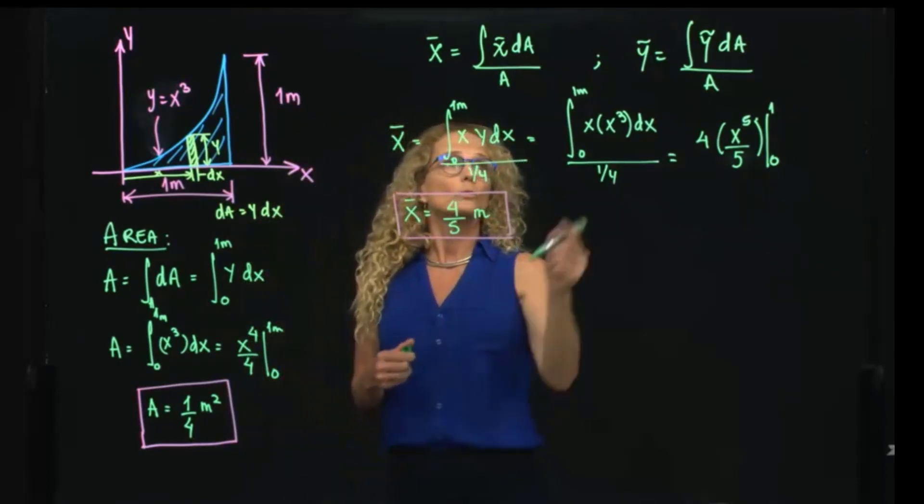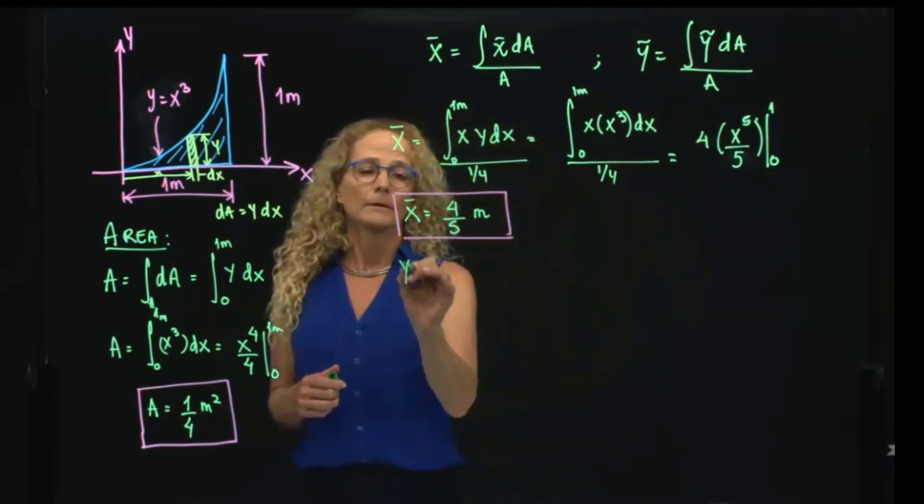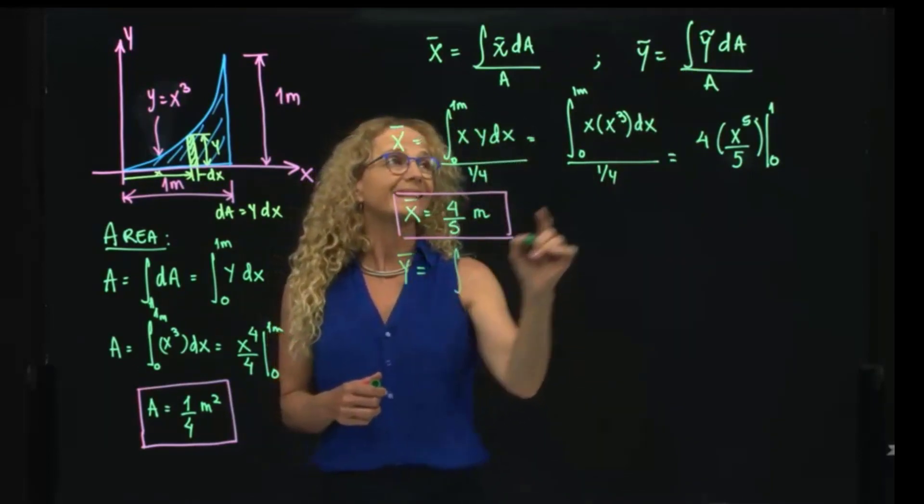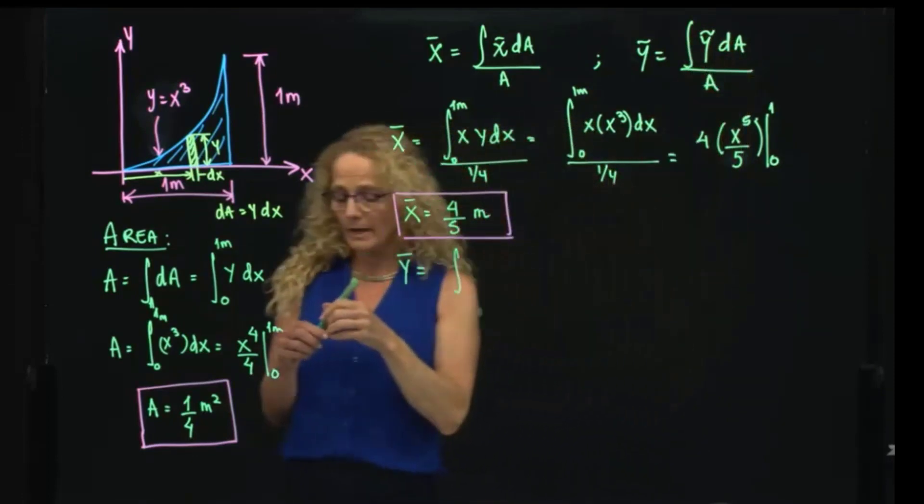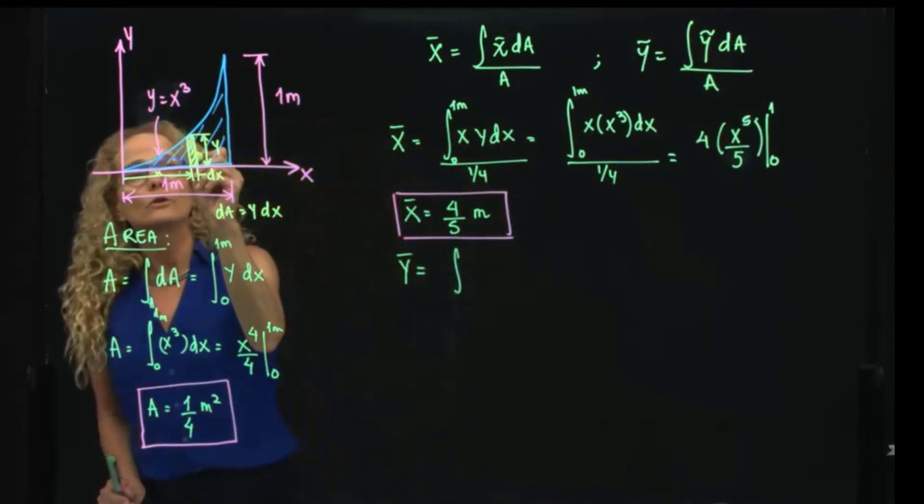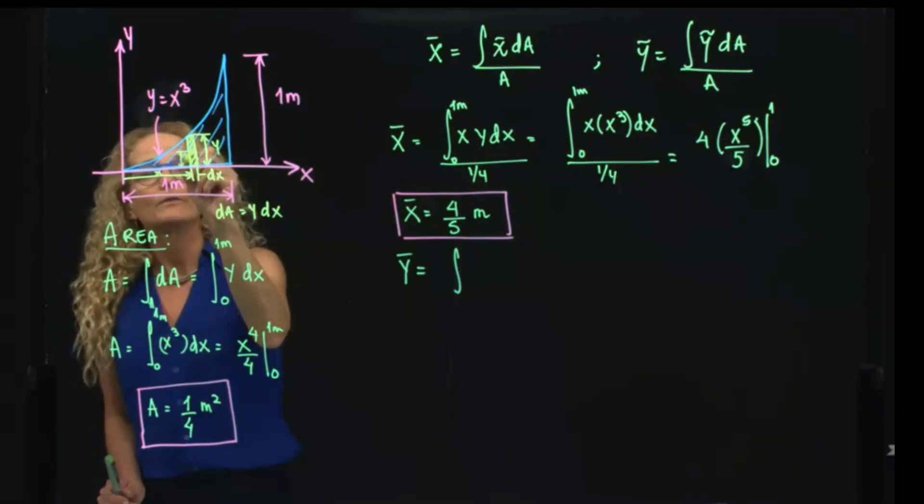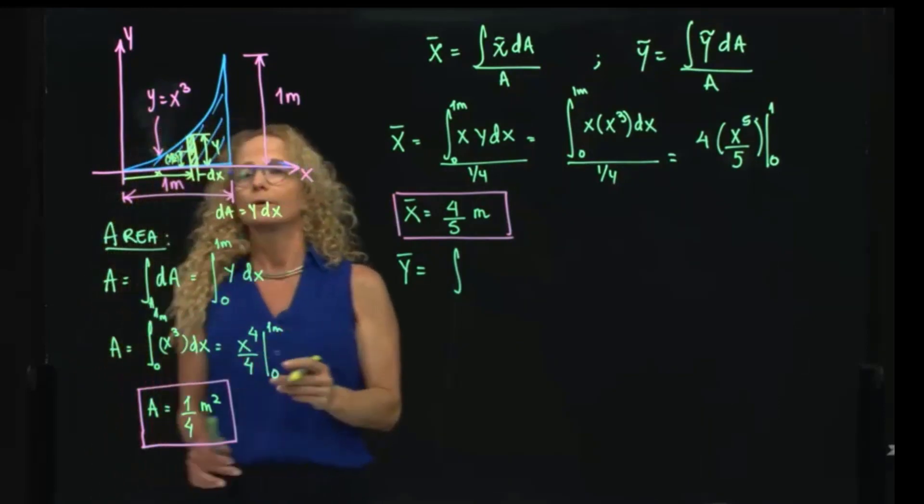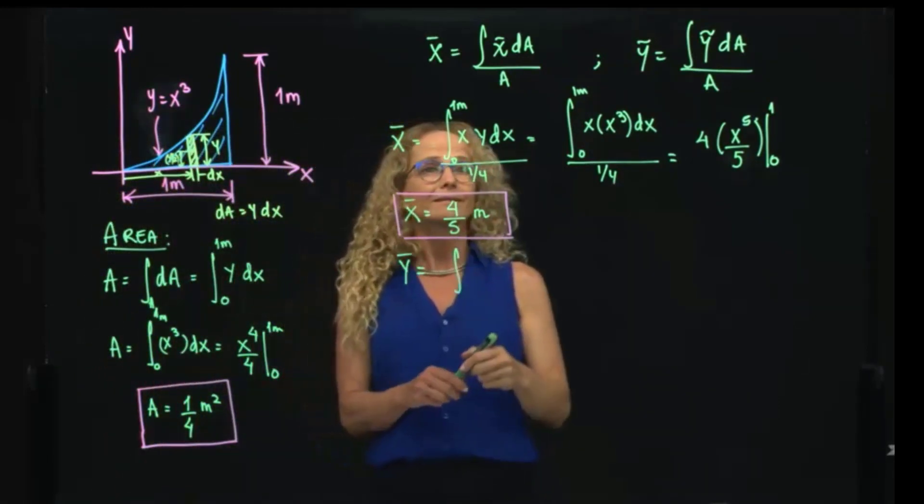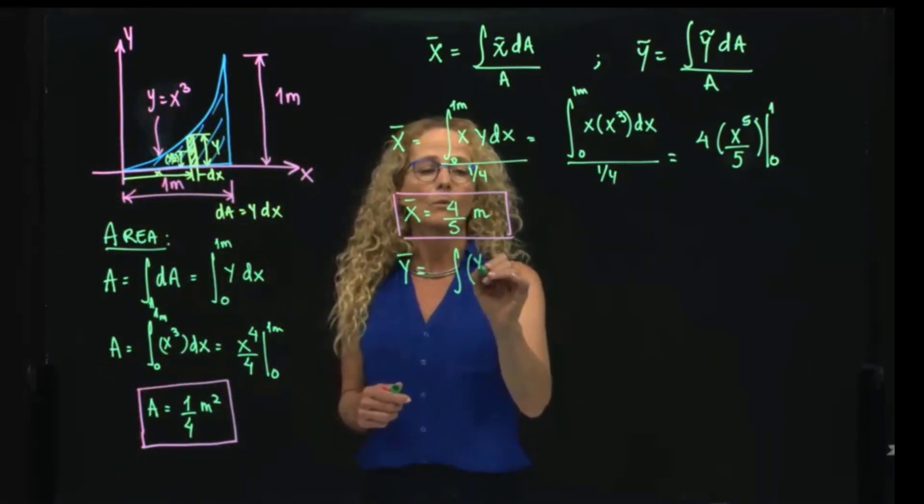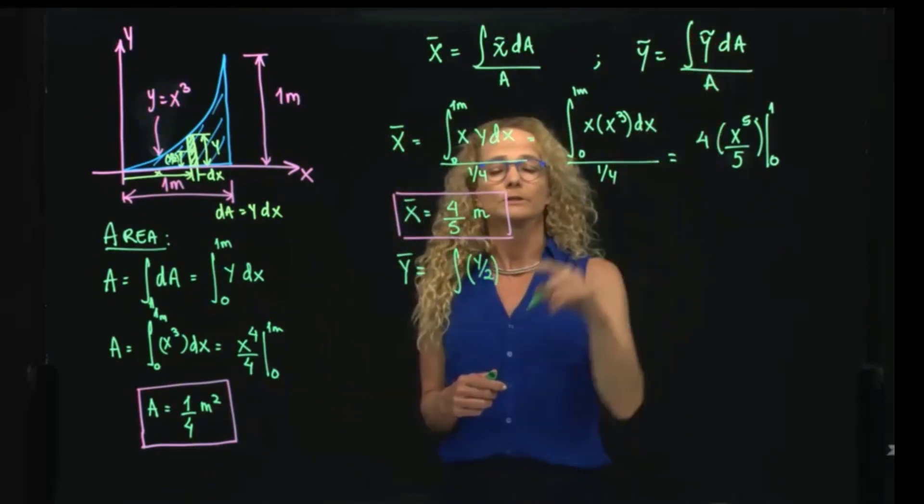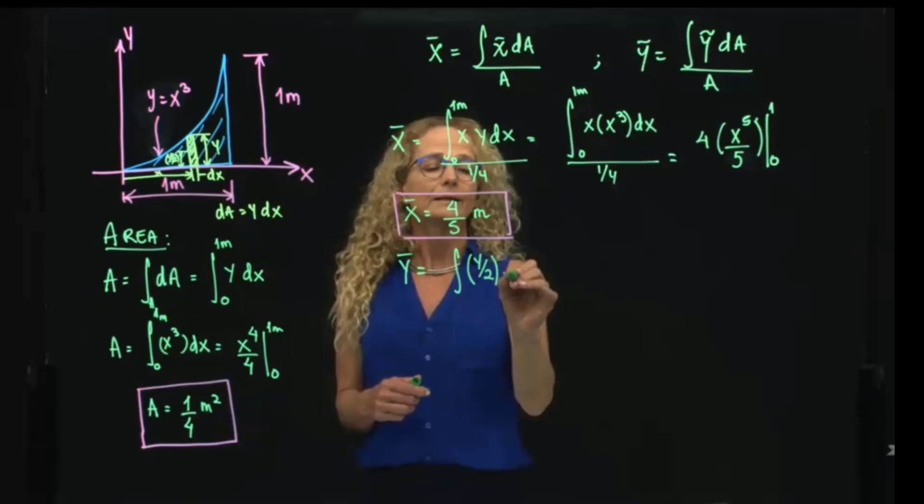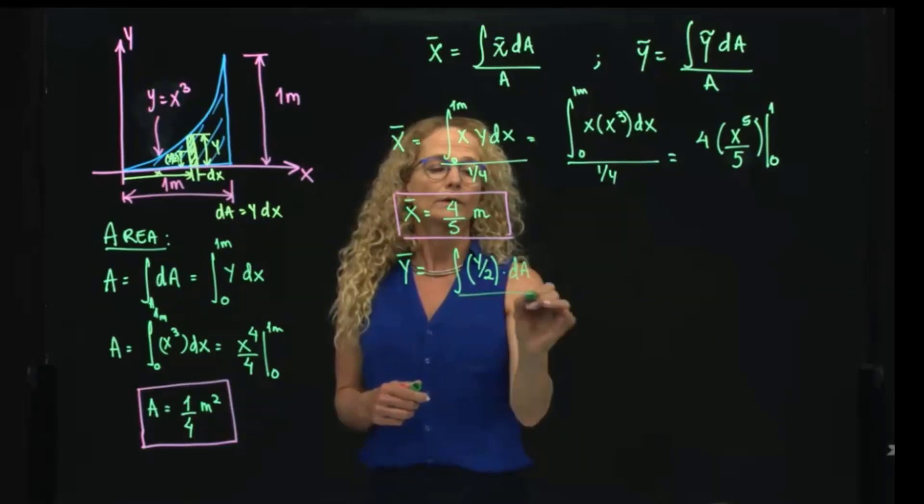Now, to do ȳ, we got that the centroid of my differential of area, as you see, is located at half of the total height, because it's a rectangle. So in this case, I have to write here y over 2, which is the centroid of my differential of area, d area over the total area.